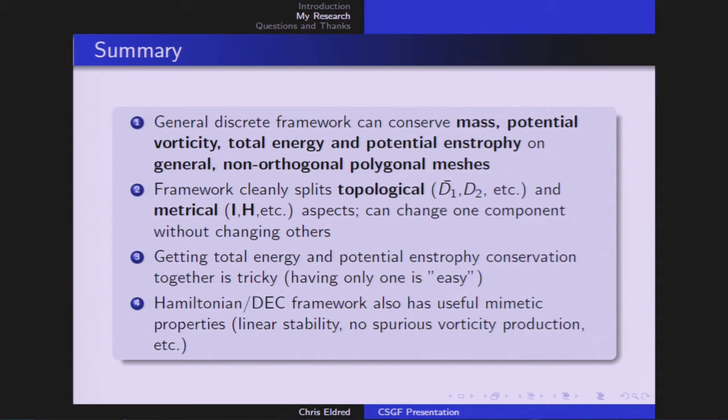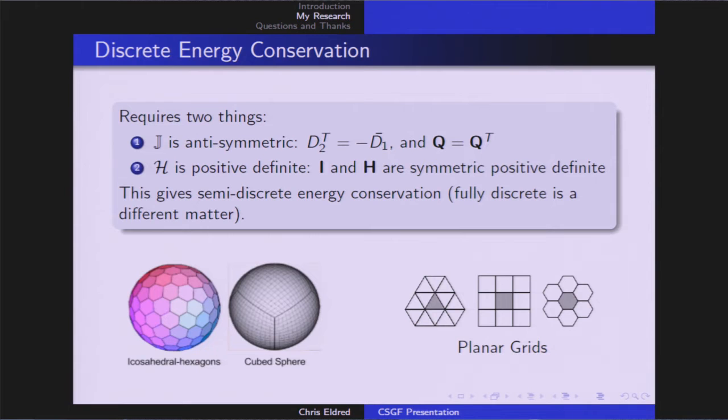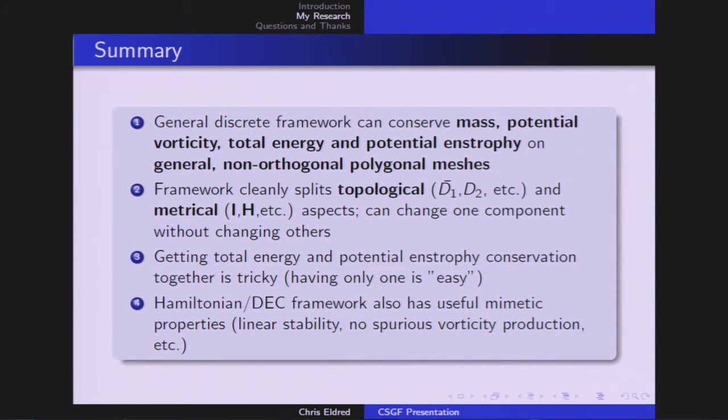Just a quick summary. What have we done? Developed this discrete framework that can conserve mass, potential vorticity, total energy, potential enstrophy on general non-orthogonal polygonal meshes. This framework's nice because it cleanly splits the topological parts, those incidence matrices, and the metrical parts. And you can change one component without changing the others. To go from an icosahedral grid to a cube sphere grid, it turns out that the only thing you have to change is H. You can keep everything else the same. This is a nice, clean separation. As I alluded to, getting both total energy and potential enstrophy conservation together is tricky. I didn't really talk about this, but we can talk more offline if you're interested. This framework also has a lot of useful mimetic properties, things like linear stability and no spurious vorticity production.